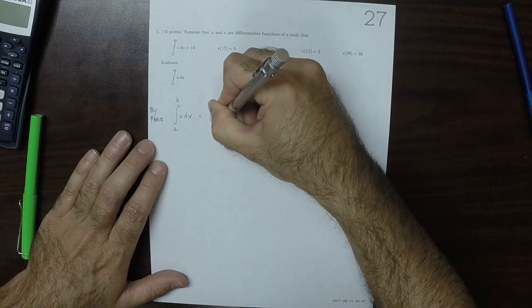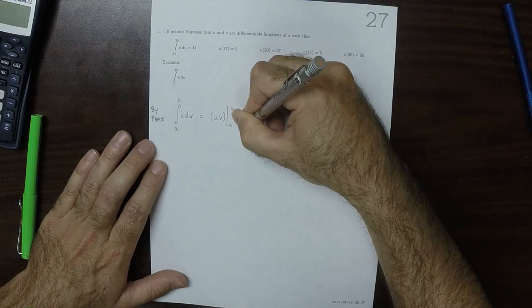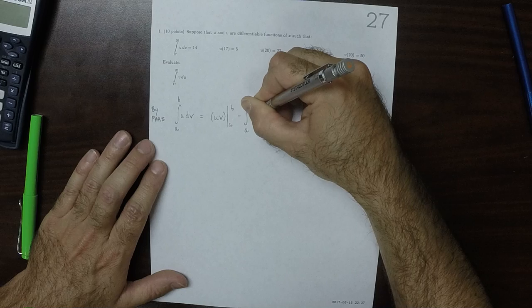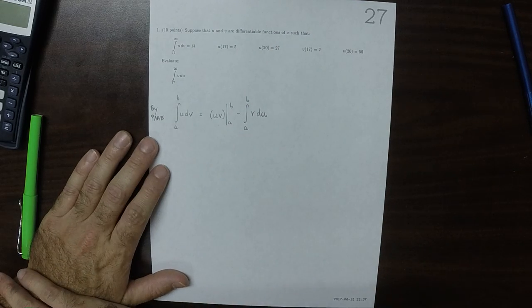The expression is UV evaluated from A to B minus the integral from A to B of V dU. So that's the integration by parts formula.